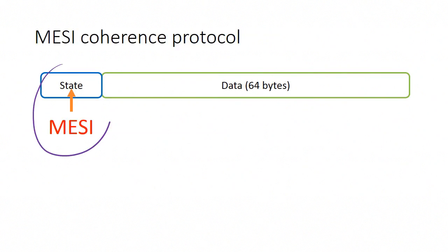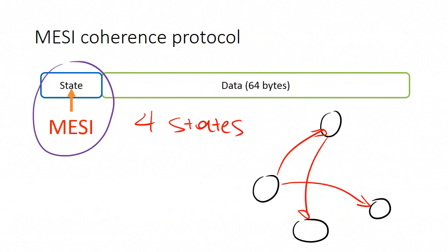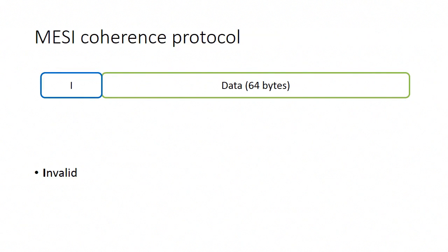The MESI protocol extends the set of states of a cache line. It consists of four different states and is nothing more than a state diagram that describes the transitions between these states in the presence of read and write operations. Before going to the state transitions, let's first describe the four states of MESI.